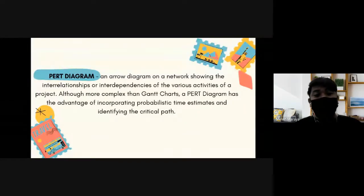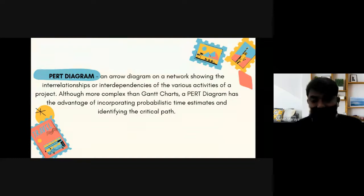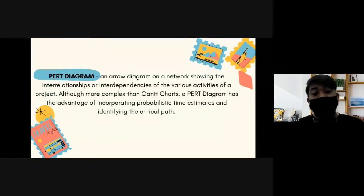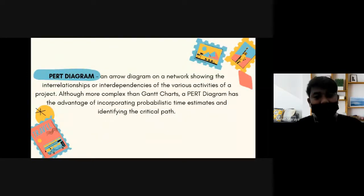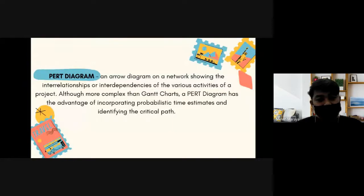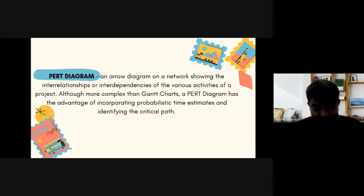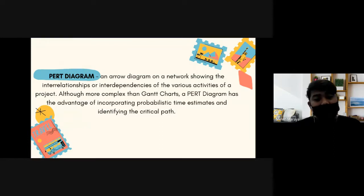PERT will provide a diagram — an arrow diagram. It is called an arrow diagram because there are arrows, and these arrows are called branches. Using the arrow, we can observe the flow of parts or activities of the project. It is on a network because all the arrows placed on the diagram are connected to each other, from the starting point to the end point.